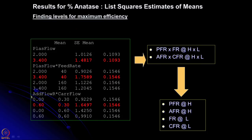As we did in the past, we have to select the factor levels. We have to select only the combination of significant factors. Plasma gas flow rate at a high level and feed rate at a low level will give you the best percentage of anatase. Additional gas flow rate at a high level and carrier gas flow rate kept at a low level give you the best possible percentage anatase. So the selection is: plasma gas flow rate at high, additional gas flow rate at high, feed rate at low, and carrier gas flow rate at low.